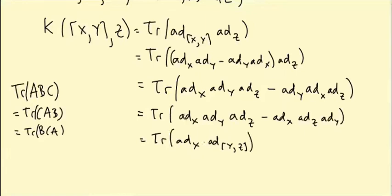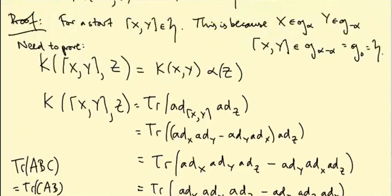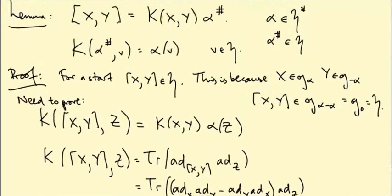So we can cyclically commute these three matrices and what we get is trace of ad X ad Y ad Z minus ad X ad Z ad Y. So let's bring out the factor of ad X and what we get is trace ad X times ad Y bracket Z, again using the fact that ad is a Lie algebra representation. So this is now K of X with Y bracket Z.